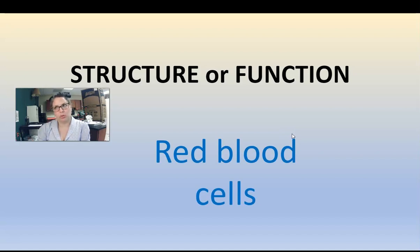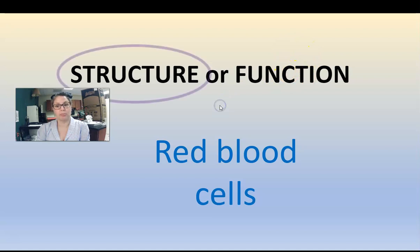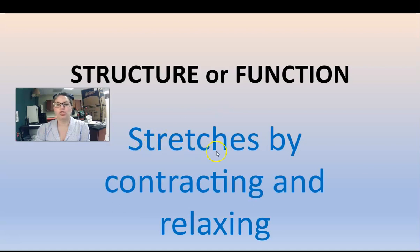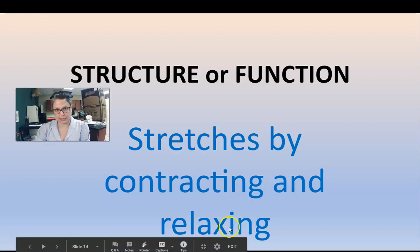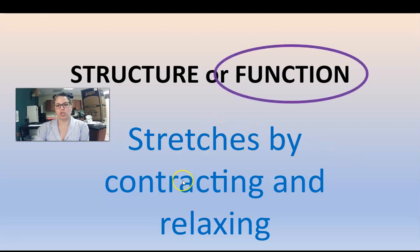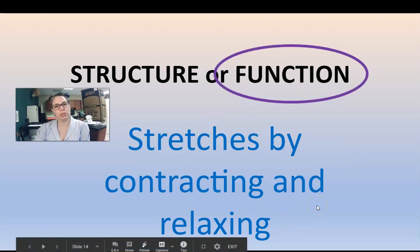Red blood cells — we saw those little round blood cells. Is that a structure or function? Is it a part of our body or is it a job that it does? That's a part — so it's a structure. 'Stretches by contracting and relaxing' — is that a noun or an action, a verb? These are action words, so these are functions. Stretches by contracting and relaxing is the function of muscle cells.